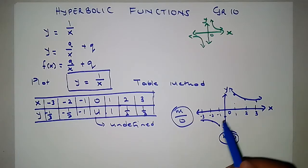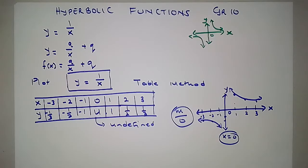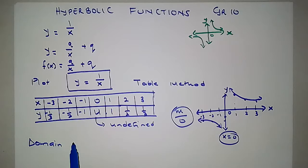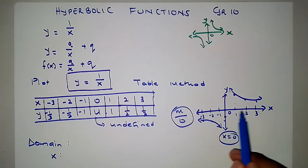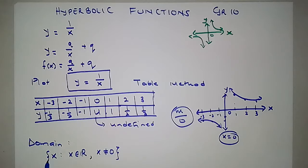We can see this function looks like wings. The function is not defined at x = 0. In these functions we appreciate the topic of domain. The domain is the set of x values. The function is defined everywhere except at x = 0. So x is an element of real numbers, however x must not equal 0.